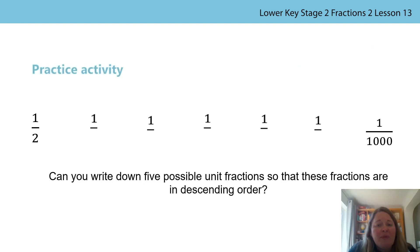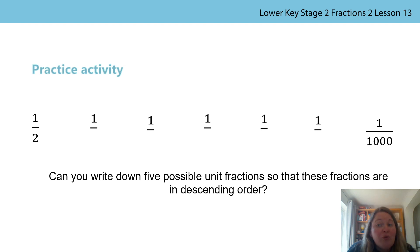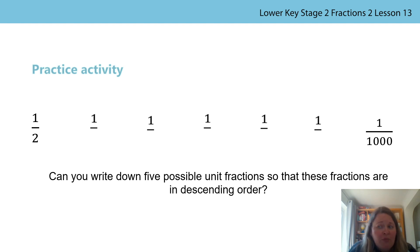I'm going to explain today's task. I have two unit fractions: one half and one thousandth. Which unit fraction is the smallest? Which one is the greatest? You're right — one half is the largest unit fraction and one thousandth is the smallest unit fraction. Now, could you write down five unit fractions that could be found in between these two fractions?